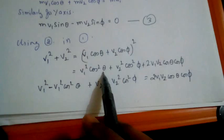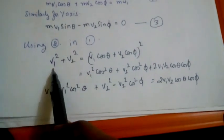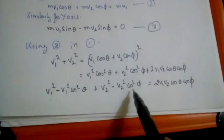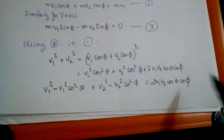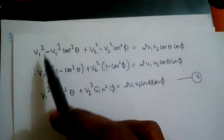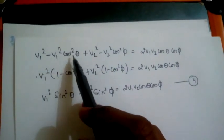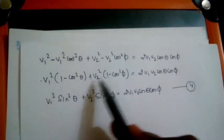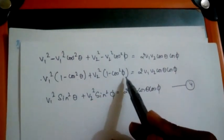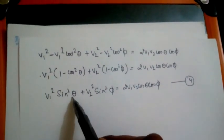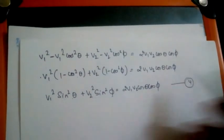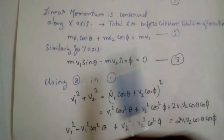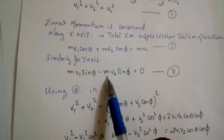Rearranging the terms, we get v1²(1 − cos²θ) + v2²(1 − cos²φ) = 2·v1·v2·cosθ·cosφ. Using the identity 1 − cos²θ = sin²θ, this becomes: v1²·sin²θ + v2²·sin²φ = 2·v1·v2·cosθ·cosφ, which we call Equation 4. From Equation 3 we already have v1·sinθ = v2·sinφ.